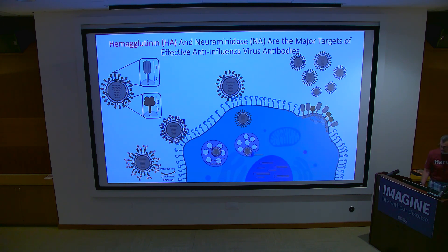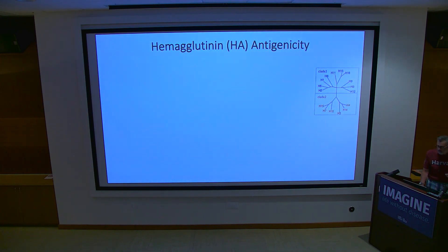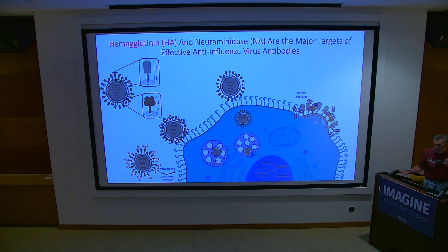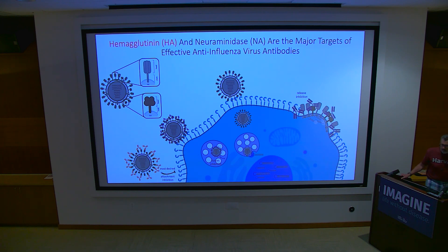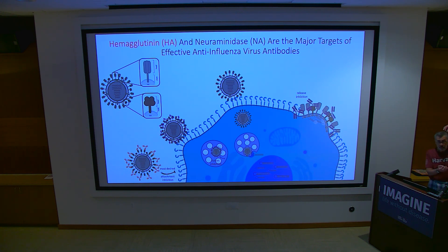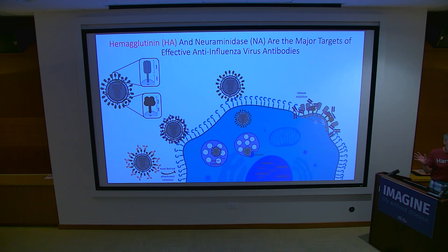Something Yvonne showed is that antibodies to the neuraminidase, and also anti-stem antibodies, can block the neuraminidase. Yvonne had a Journal of Experimental Medicine paper showing that if you increase the height of the NA, the HA stalk antibodies can no longer block the NA active site, and mice are less well protected by the anti-stem antibodies. This is a whole new mechanism Yvonne found for how anti-stem antibodies work.